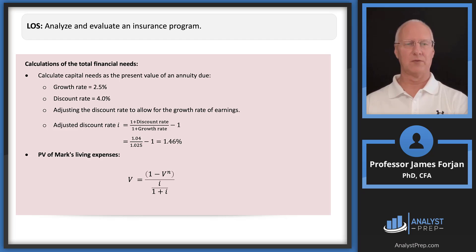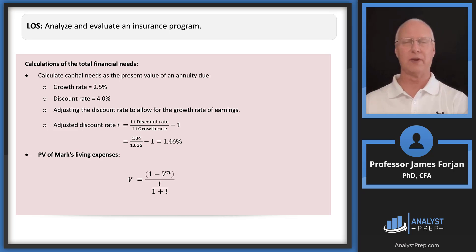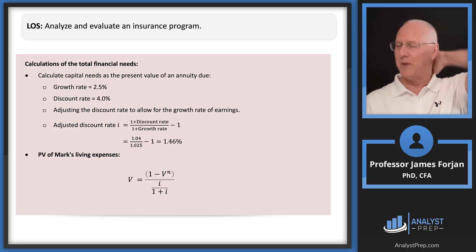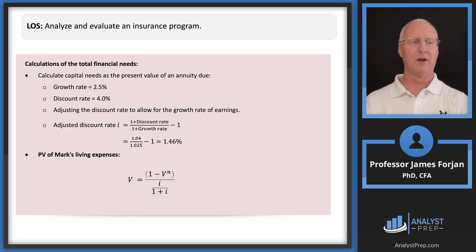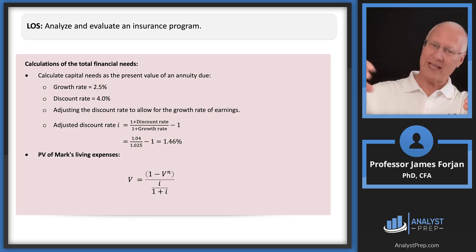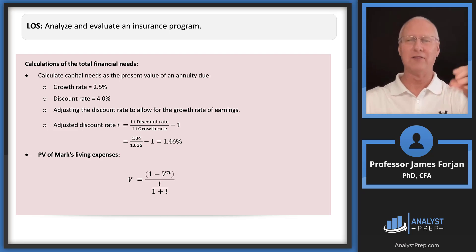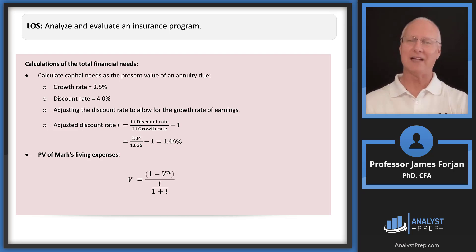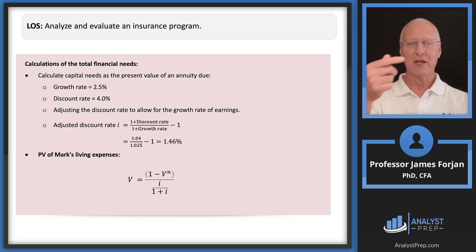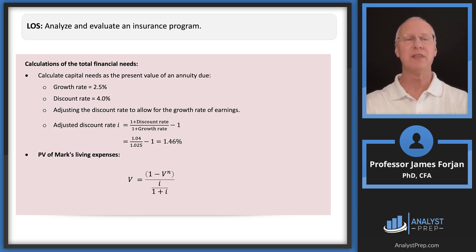The adjusted discount rate assumes the discount rate is greater than the growth rate. Think of it like Pac-Man: you're growing at 2.5% but taking the present value at 4%, and the adjusted discount rate is the net effect of those two opposing forces. Note that it's not simply 4% minus 2.5% = 1.5% — it's slightly less because of compounding effects.